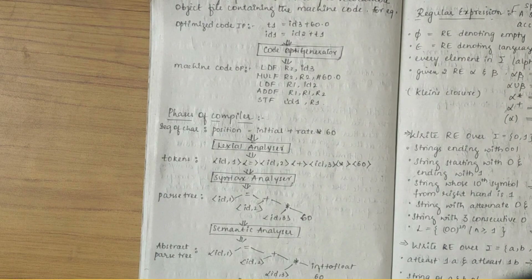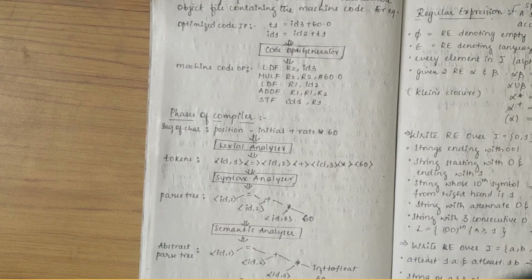The optimized three-address code is again fed to the code generator to produce the proper machine code. That is how the phases of compiler work. If you have any doubts, let me know in the comments and subscribe to the channel.